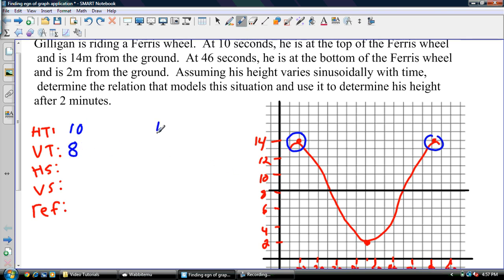My HS is period divided by 360. And my period goes from here to here, and that's 10 to 82 seconds. So my period is going to be 72 divided by 360, which if you reduce that fraction is 1 over 5. I always have to reduce at that step. So my HS is 1/5.